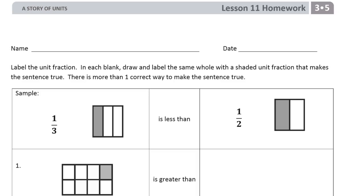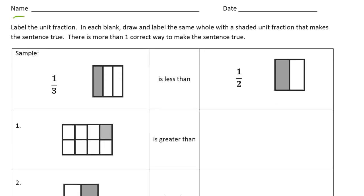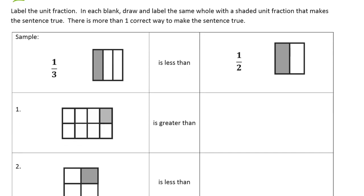Welcome to the homework for lesson 11. This is module 5 of grade 3. Please write your name first, and we're labeling unit fractions. In each blank, draw and label the same whole with a shaded unit fraction that makes the sentence true.